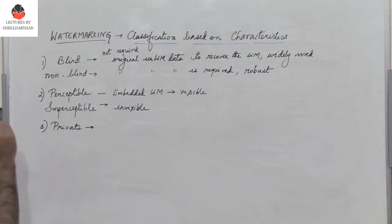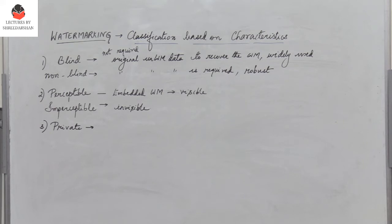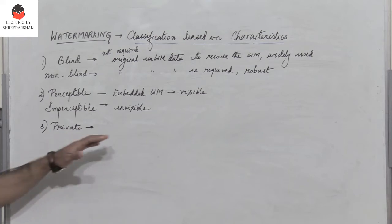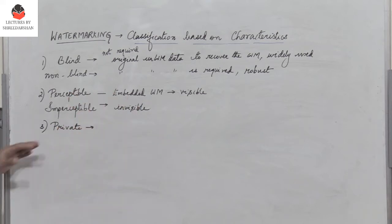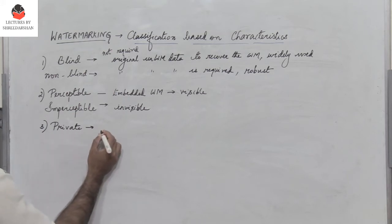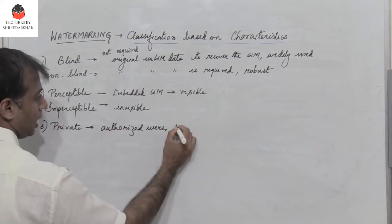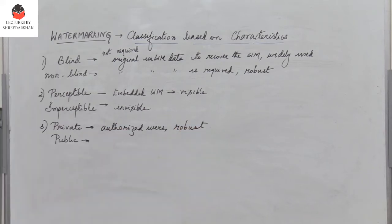The next classification is private versus public watermarks. A watermark is said to be private if only authorized users can detect it. Private watermarking techniques are designed so that it is almost impossible for unauthorized users to extract the watermark, making them more robust — they can only be detected by authorized users.